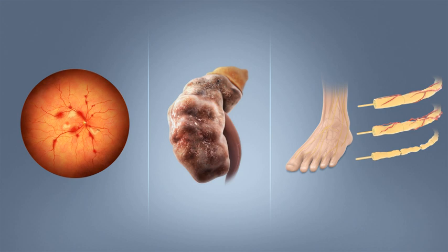Mild to moderate cases are self-treated by eating or drinking something high in sugar. Severe cases can lead to unconsciousness and must be treated with intravenous glucose or injections with glucagon. People, usually with type 1 DM, may also experience episodes of diabetic ketoacidosis, DKA, a metabolic disturbance characterized by nausea, vomiting and abdominal pain, the smell of acetone on the breath, deep breathing known as Kussmaul breathing, and in severe cases a decreased level of consciousness. A rare but equally severe possibility is hyperosmolar hyperglycemic state, HHS, which is more common in type 2 DM and is mainly the result of dehydration.